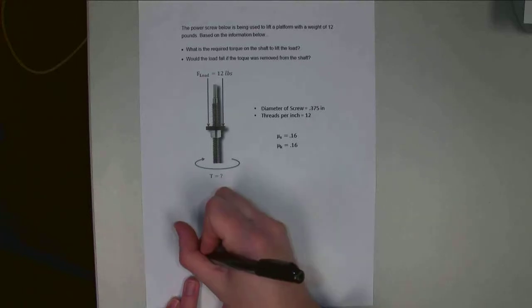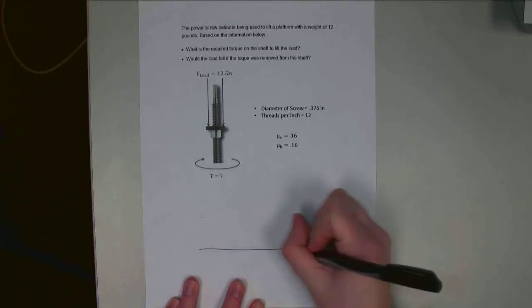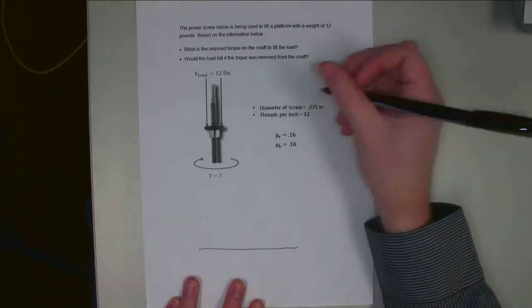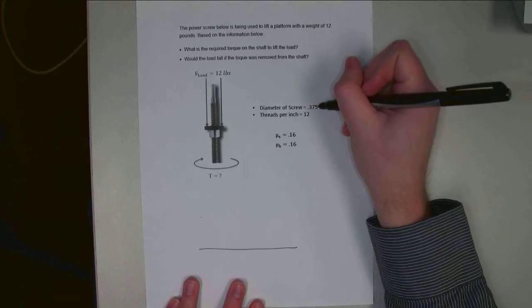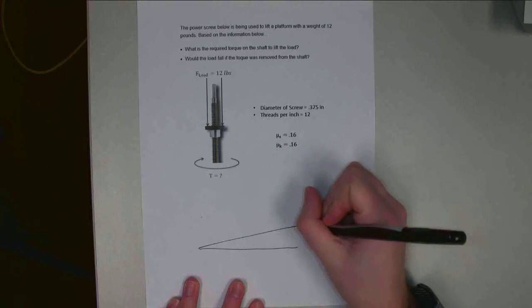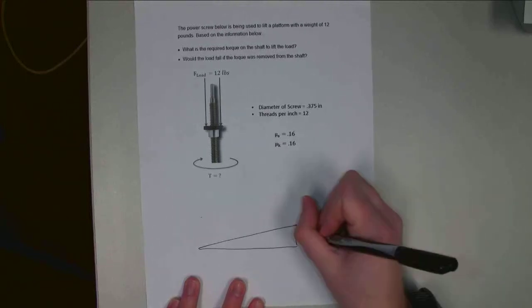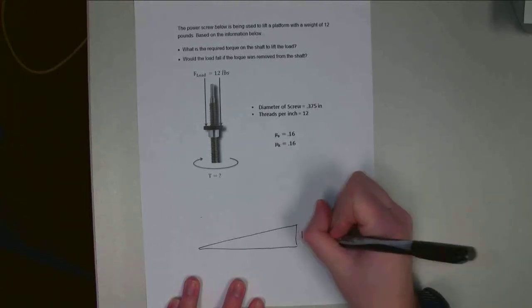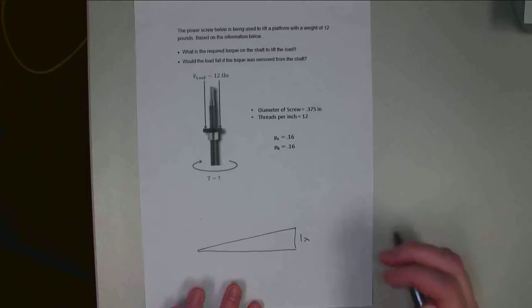For the lead angle, the key pieces of information are the diameter of the screw and the threads per inch. If I've got 12 threads per inch, that means for every one inch going up, I'm going around the circumference of the screw 12 times.